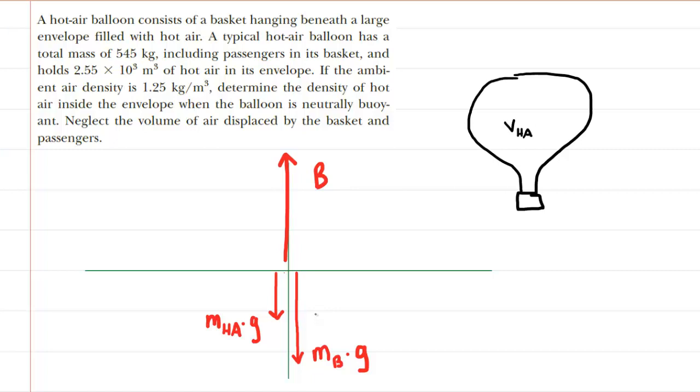We have two gravitational forces. We have the gravitational force exerted on the balloon itself, and then the gravitational force exerted on the hot air inside the balloon. Notice they are both mg forces, but we used a subscript b to denote the mass of the balloon, and then ha to denote the mass of the hot air inside the balloon.